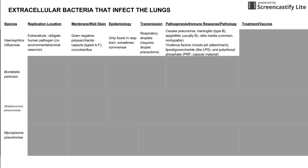There are three main virulence factors on Haemophilus. This includes pili, which are little projections from the cell that Haemophilus uses to attach. It also includes lipo-oligosaccharides, which are similar to lipopolysaccharides found in other gram-negatives, and polyribosyl phosphate, a material found in the capsule of the cells.